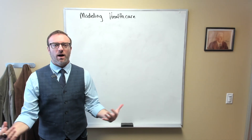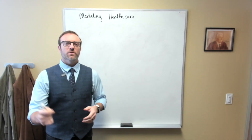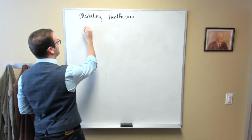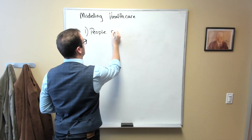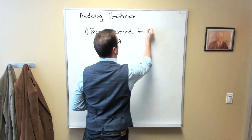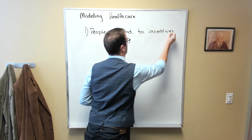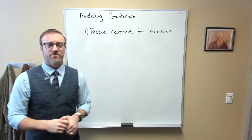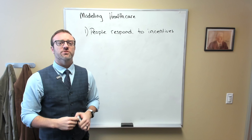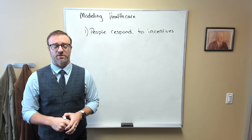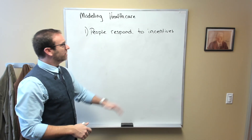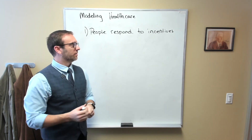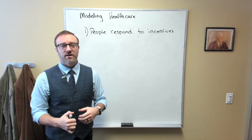Let's get into how we would actually model healthcare. First, we're going to make a couple of quick assumptions. The first is that people respond to incentives. Incentives are a hallmark in economics — they're basically costs and benefits. If the cost of something goes up, you're going to do less of it. If the benefit goes up, you're going to want to do more of it. Incentives are basically the rules of the game; they help us determine our behavior. Incentives matter.